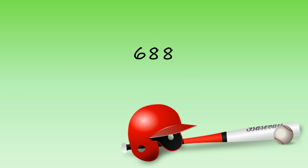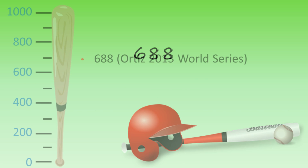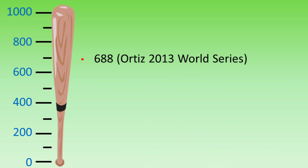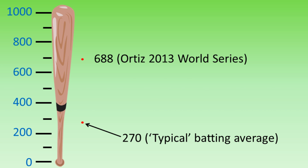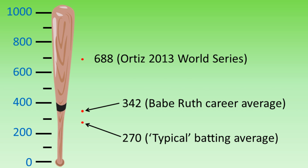Now let's compare this to a typical average. Over time, a run-of-the-mill player might average around 270. The great Babe Ruth had a career average of 342. So when you consider that 342 is only a little bit higher than 270, you can see what a totally off-the-charts effort it was by Ortiz to average 688.